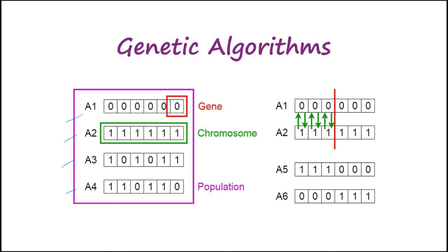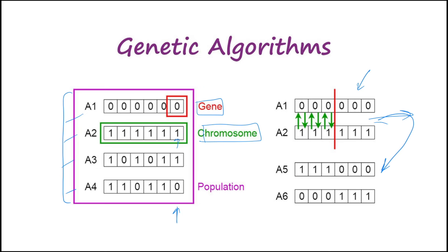If we look at genetic algorithms from a graphical perspective, A1, A2, A3, and A4 are bits that represent a solution to some problem. As a whole, all of these are our population. Each one of these solutions can be called a chromosome, and each individual bit in the solution can be called a gene. We pick some fit individuals — which might be A1 or A2 — and we can exchange genes with them by some methodology until we get something entirely different, like A5 and A6 as the result. By combining them, we get new solutions that are possibly better than A1 or A2.